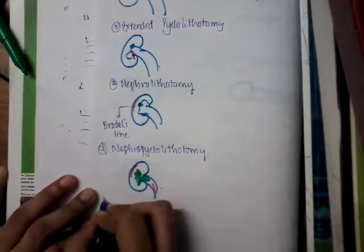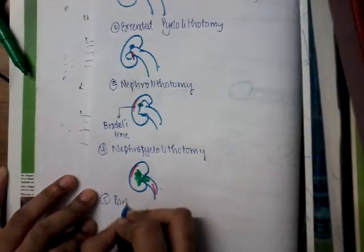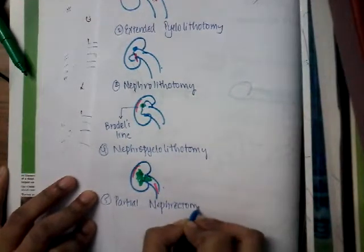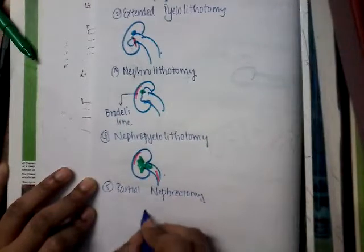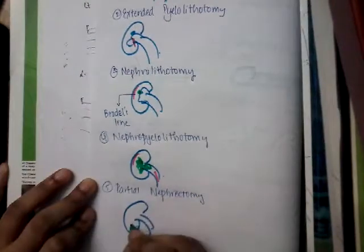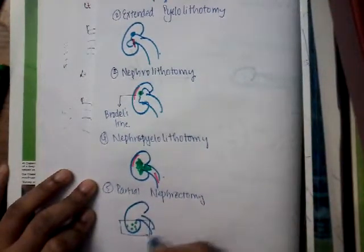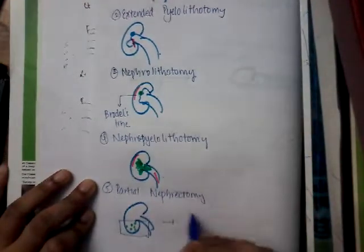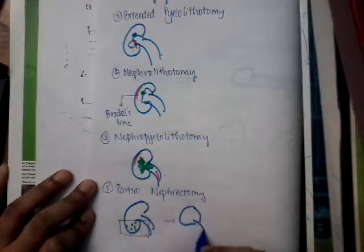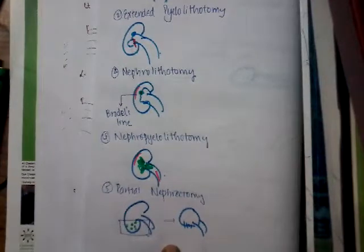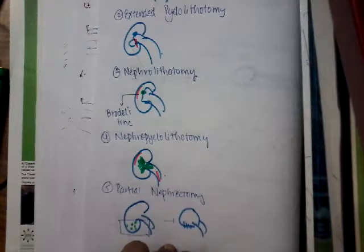Fifth, partial nephrectomy can be done when stones are present at one pole of the kidney — either the lower pole or upper pole. In that case, that section with the stones is removed, which is called partial nephrectomy, where you remove a pole of the kidney.